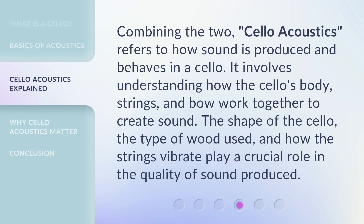Combining the two, cello acoustics refers to how sound is produced and behaves in a cello. It involves understanding how the cello's body, strings, and bow work together to create sound. The shape of the cello, the type of wood used, and how the strings vibrate play a crucial role in the quality of sound produced.